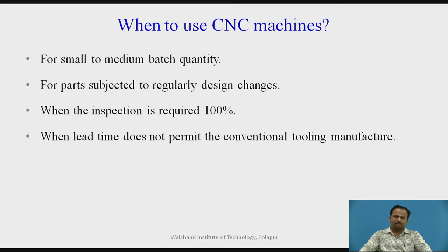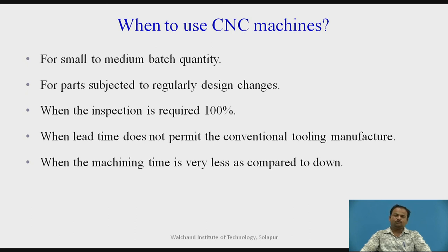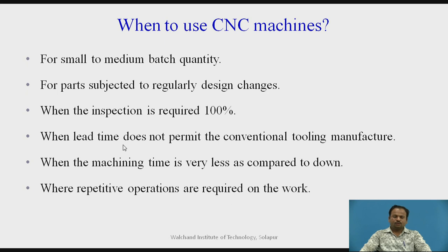When lead time does not permit conventional tooling manufacture, we can also use a CNC machine. When machining time is very short compared to downtime, if a customer requires mass production of a certain job and we try to do it on a conventional machine, we cannot supply the parts in the required time — therefore we need to go for a CNC machine to complete the order in time. Where repetitive operations are required on the work, if I need to make 1000 repetitions of one object, then definitely I need to go for a CNC machine.